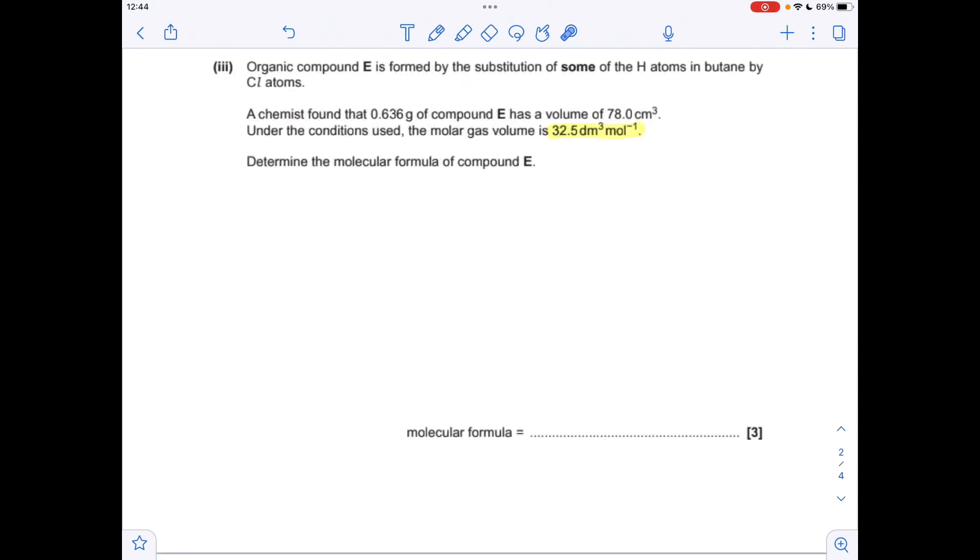And the last part of this question, so organic compound E is formed by the substitution of some of the hydrogen atoms in butane by chlorine. So we've got the mass of compound E, and we know its volume in centimeters cubed, but because this has not been done at RTP, we can't use the 24 dm cubed molar gas volume, we've got a different molar gas volume for the temperature that this has been carried out at. So moles equals volume over the molar gas volume, but remember it's been changed from 24 to that, which comes out to 0.0024 moles of E.